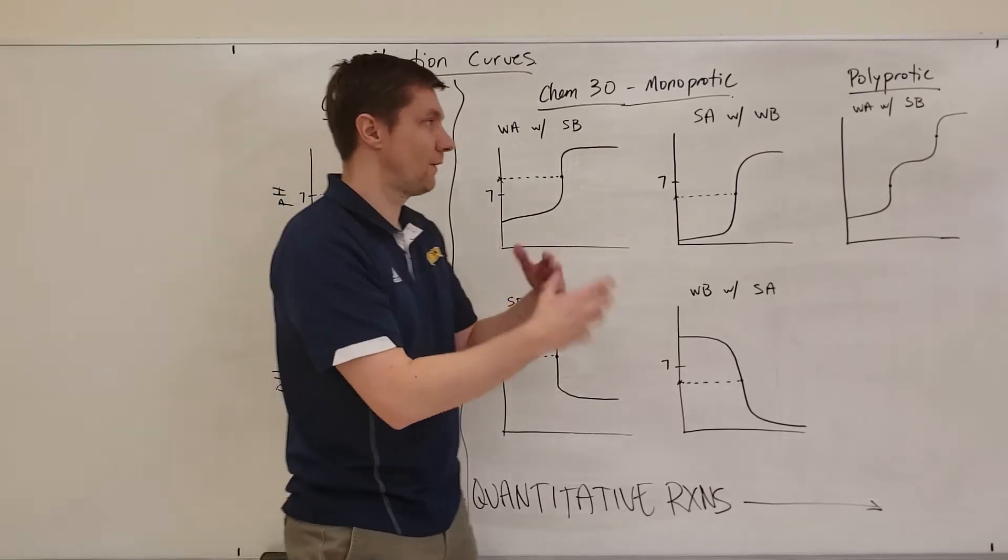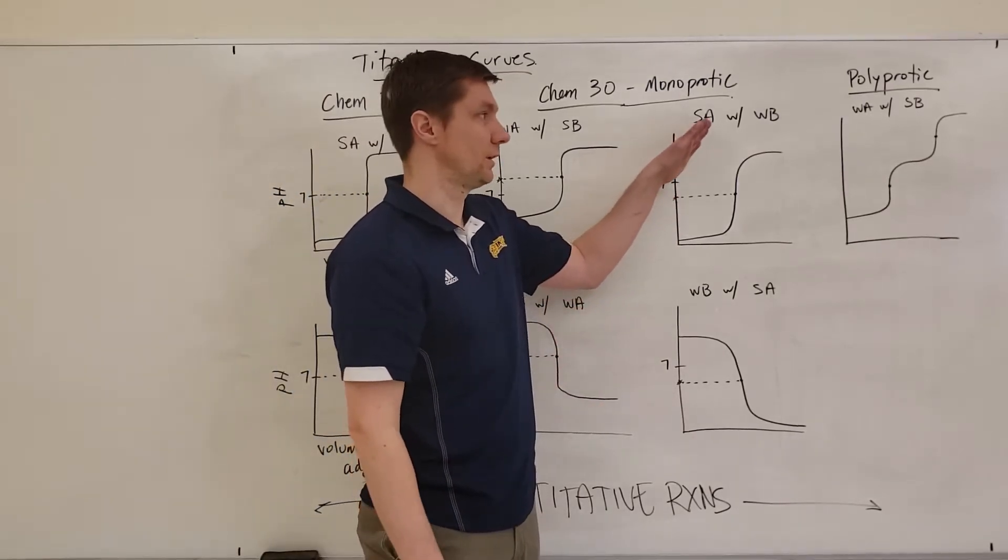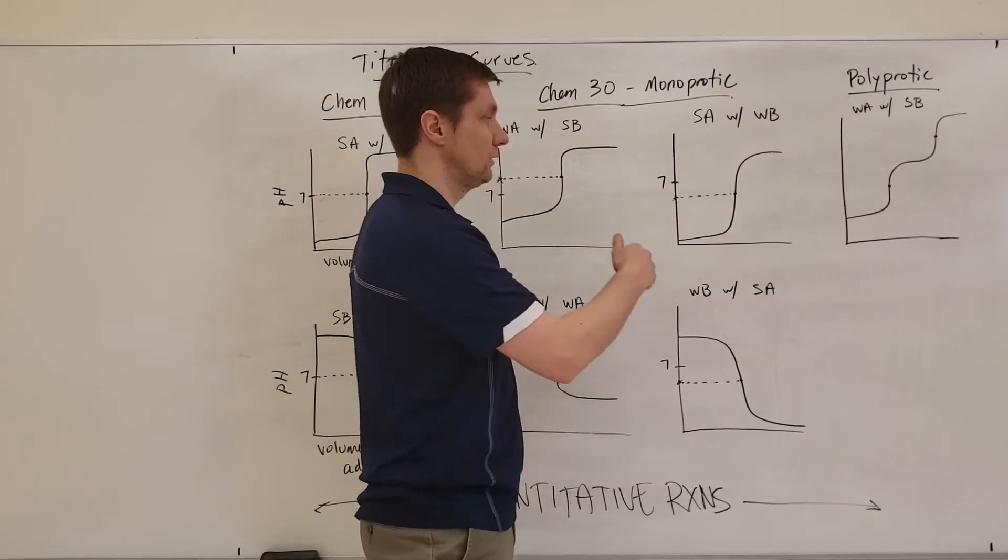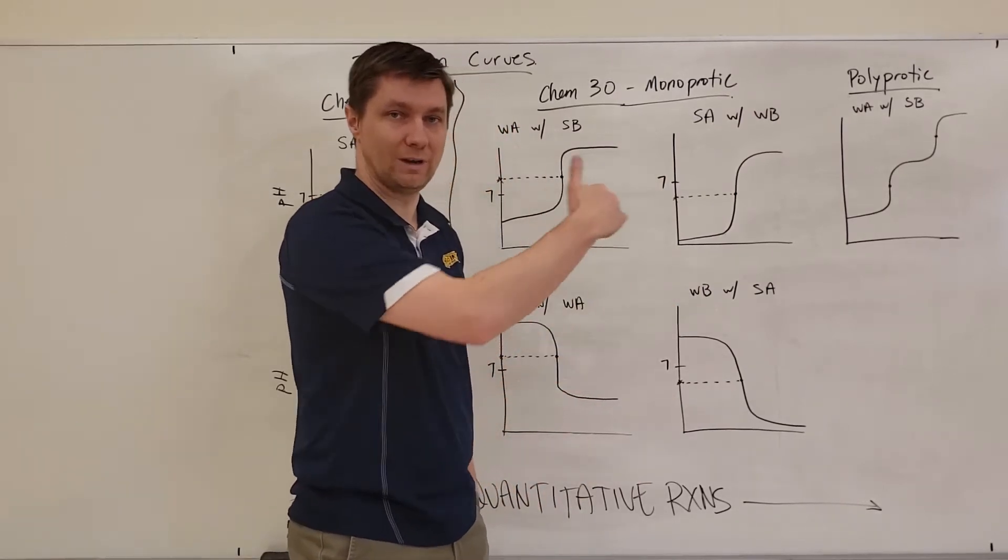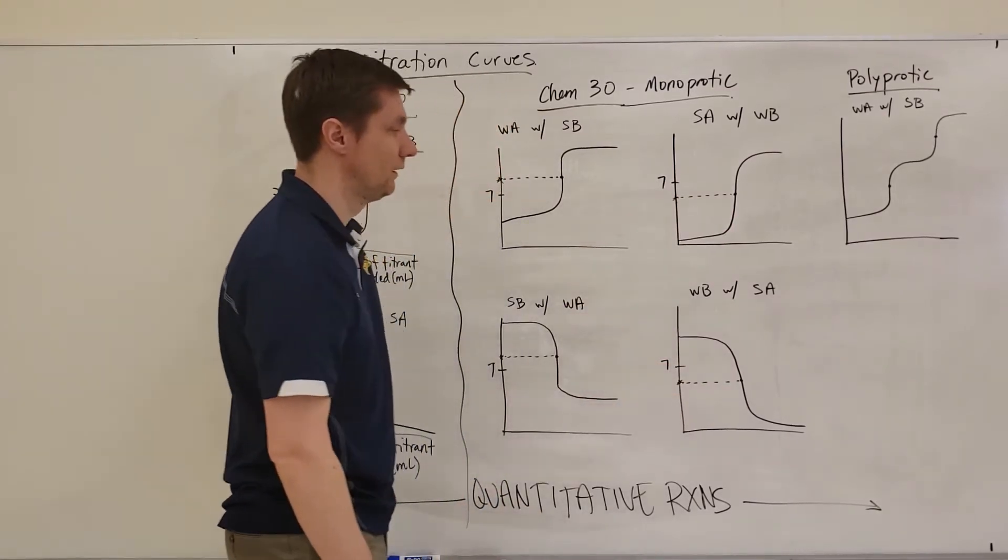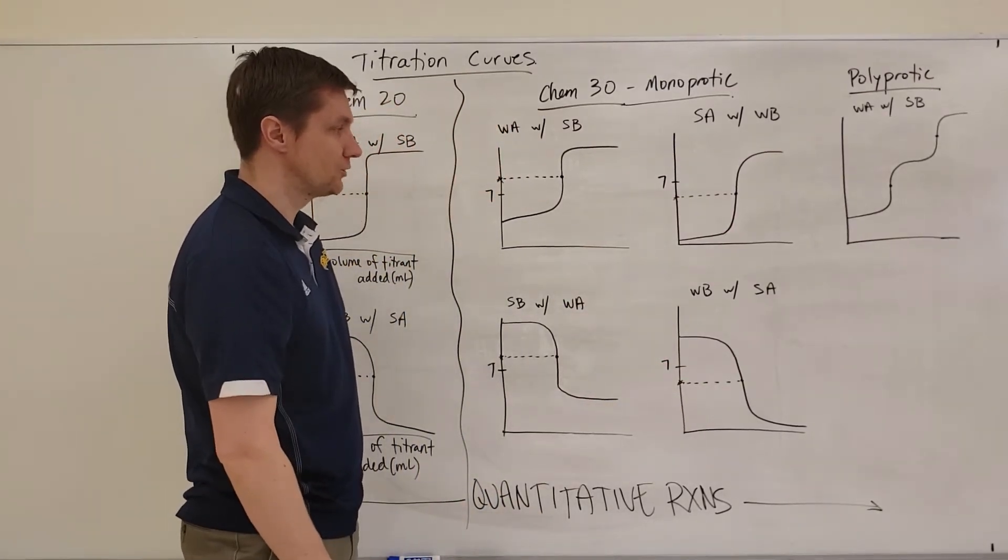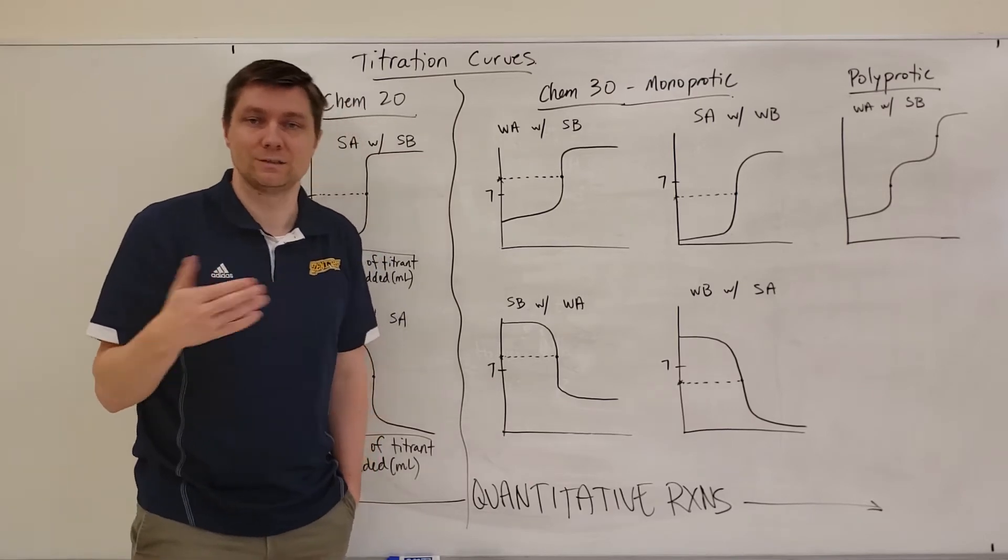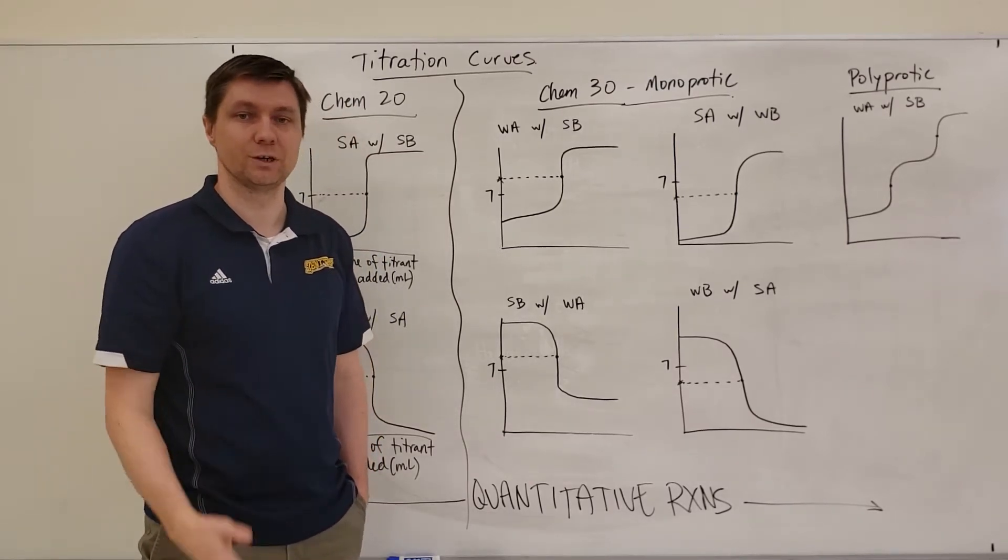If I flip it around to where now I'm titrating a weak acid with a strong base, you can see that I also get this shift of an equivalence point, but now it's below 7. So you can see on the diagrams here how I have that labeled. And so those are for monoprotic acids and bases that we're using in titrations.